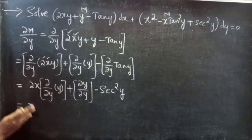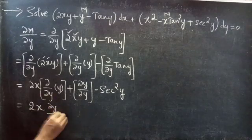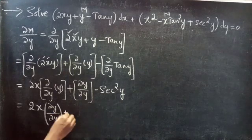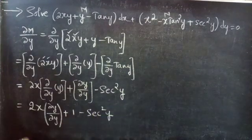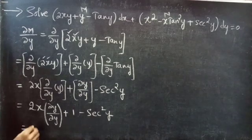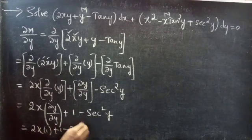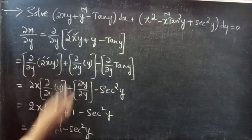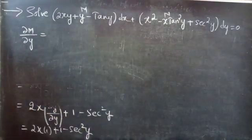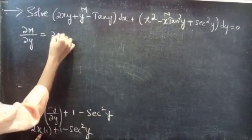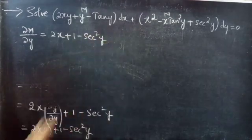Therefore ∂M/∂y = 2x·(1) + 1 − sec²y = 2x + 1 − sec²y.